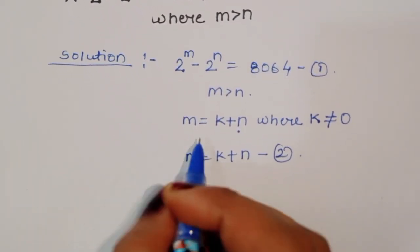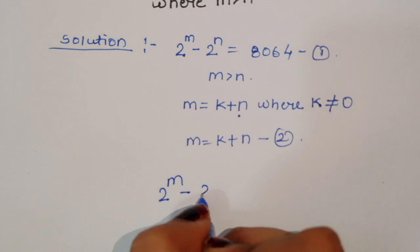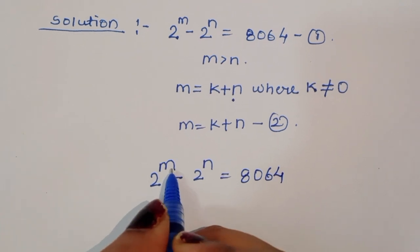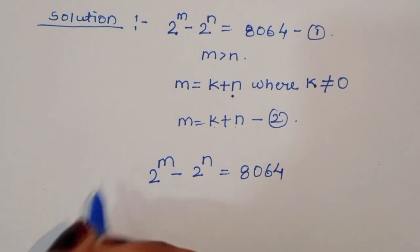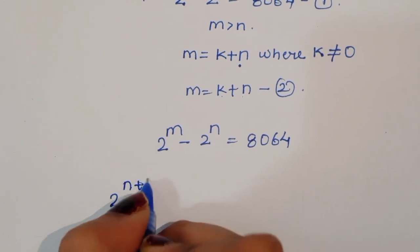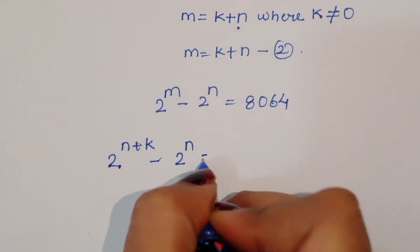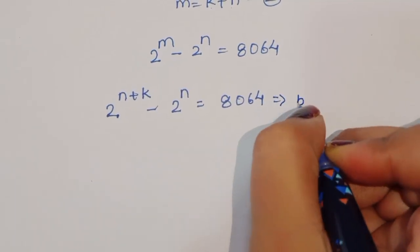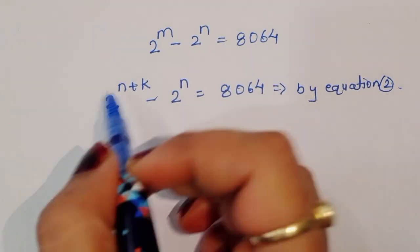Now we can write the first equation: 2 power m minus 2 power n is equal to 8064. Since m is equal to k plus n, we substitute to get 2 power (n plus k) minus 2 power n is equal to 8064, by equation 2.